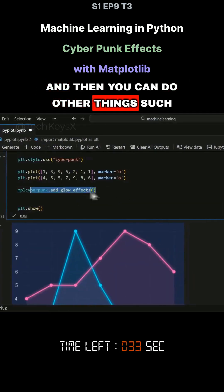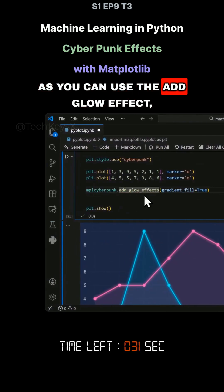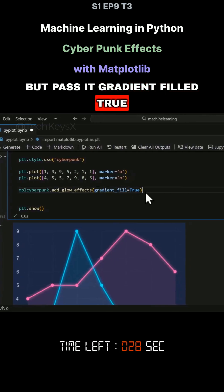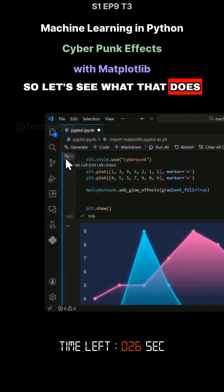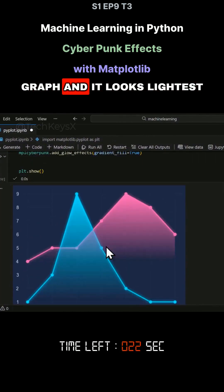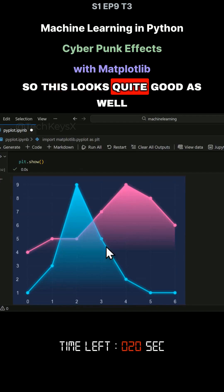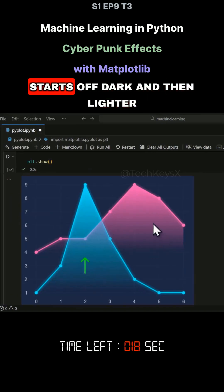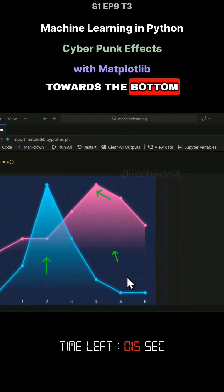And then you can do other things, such as you can use the add glow effect, but pass it gradient filled true. So let's see what that does. You can see this actually creates the gradient effect to your graph and it looks nice. So this looks quite good as well. And you can see how the gradient starts off dark and then lighter towards the bottom.